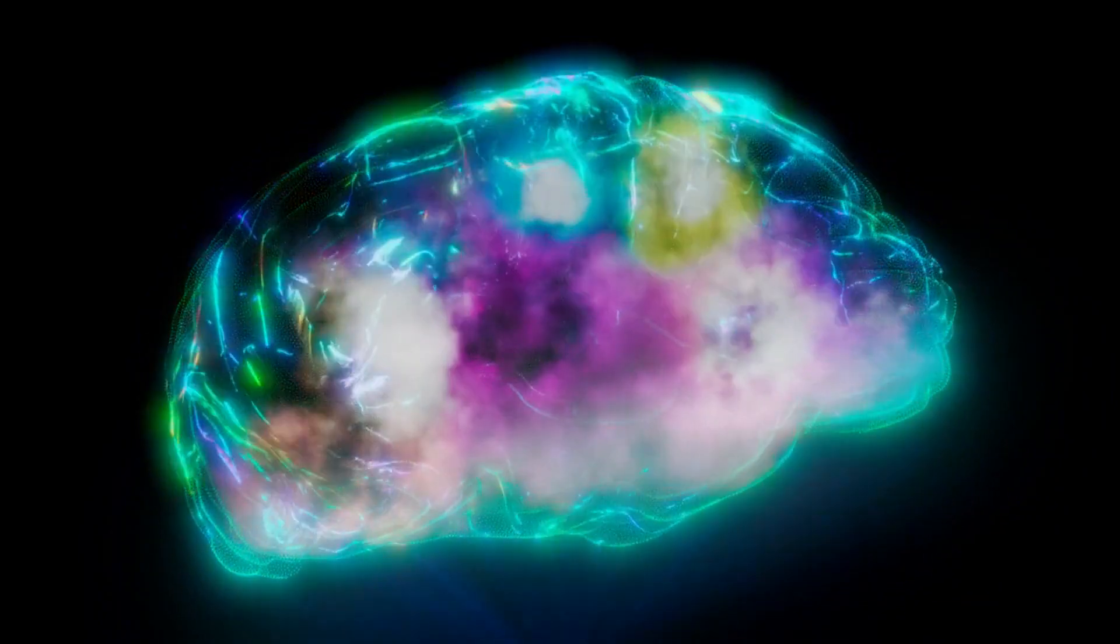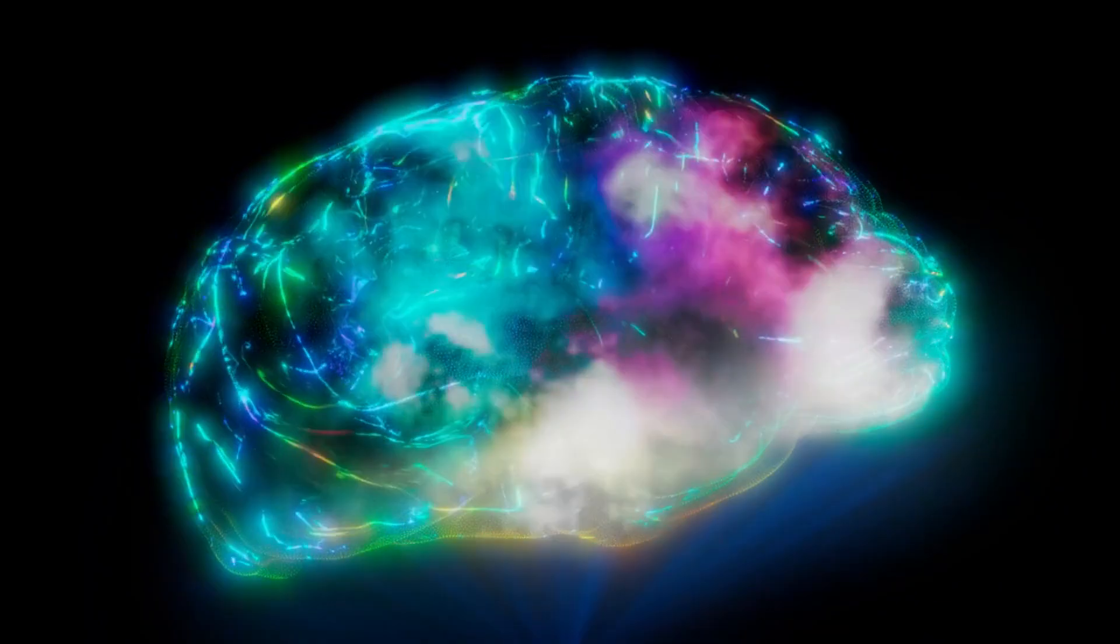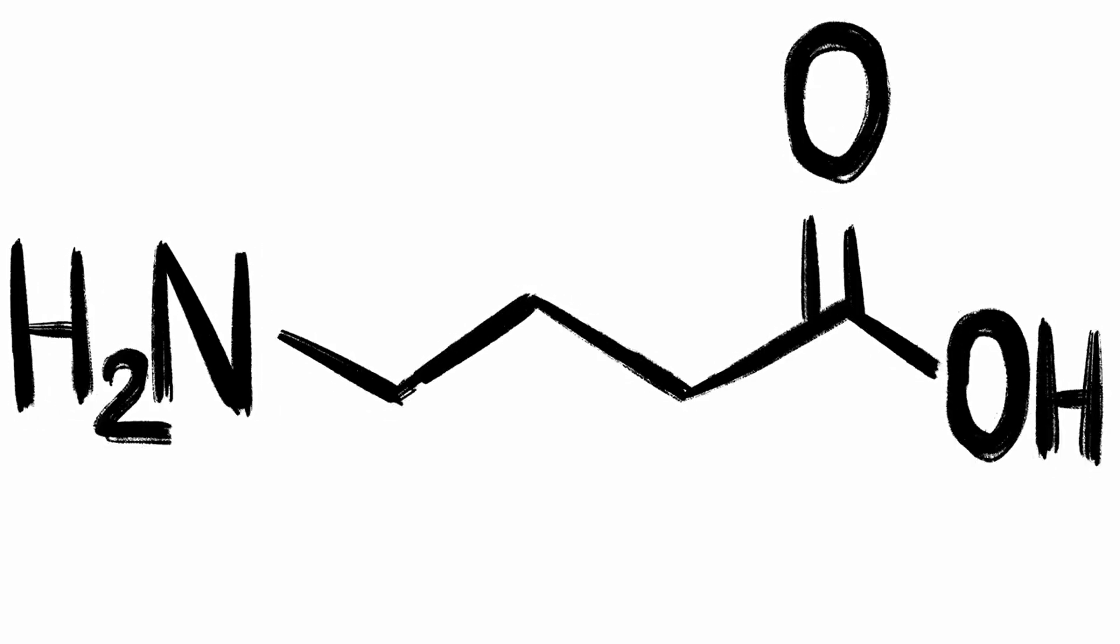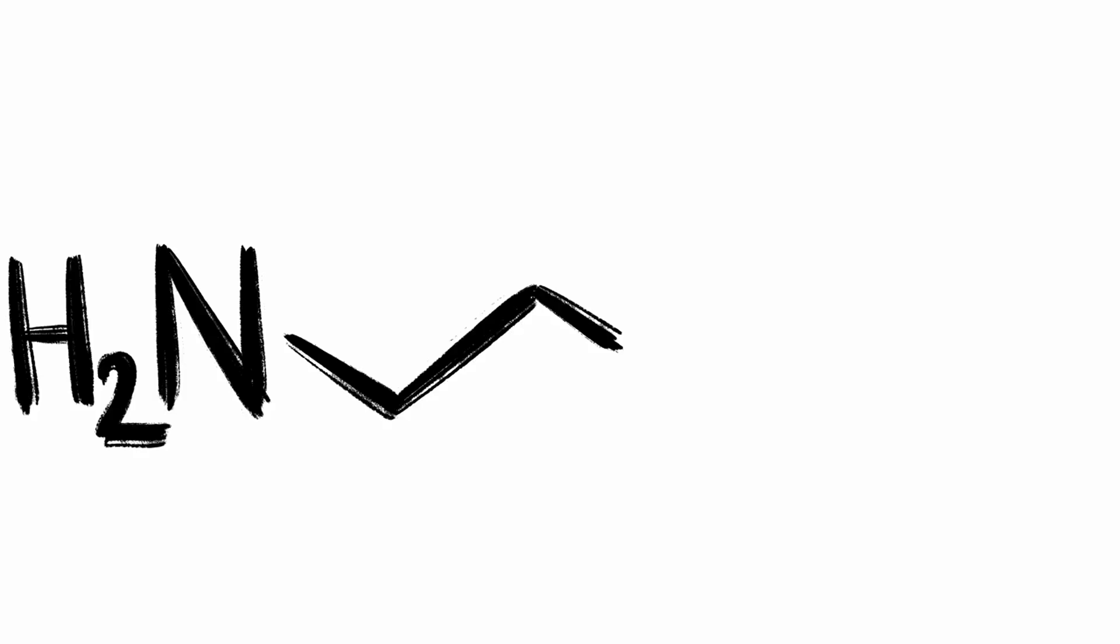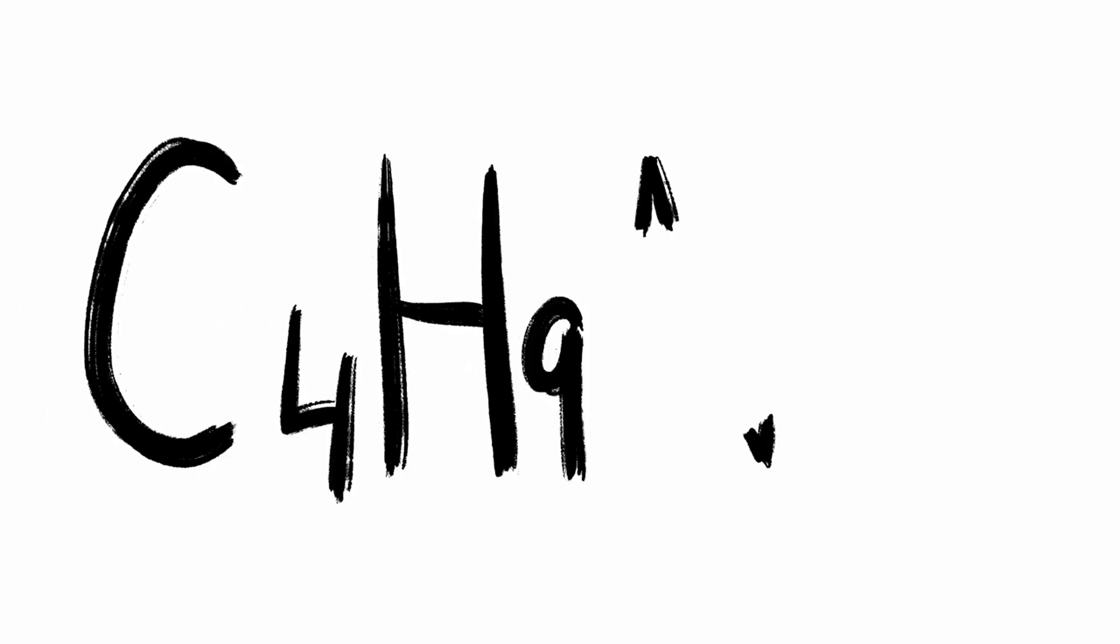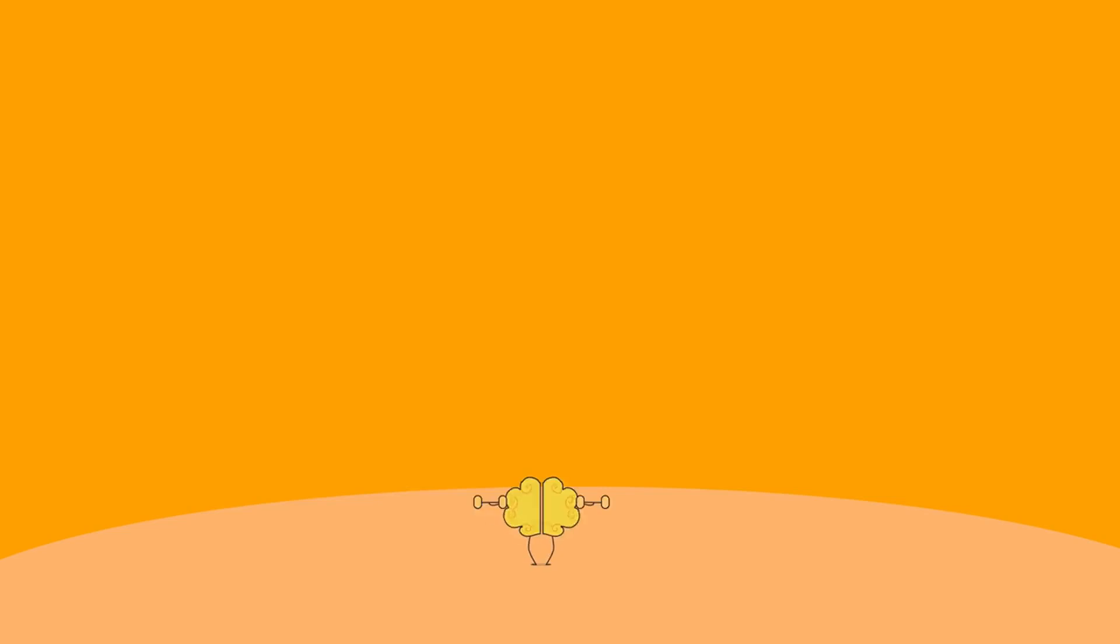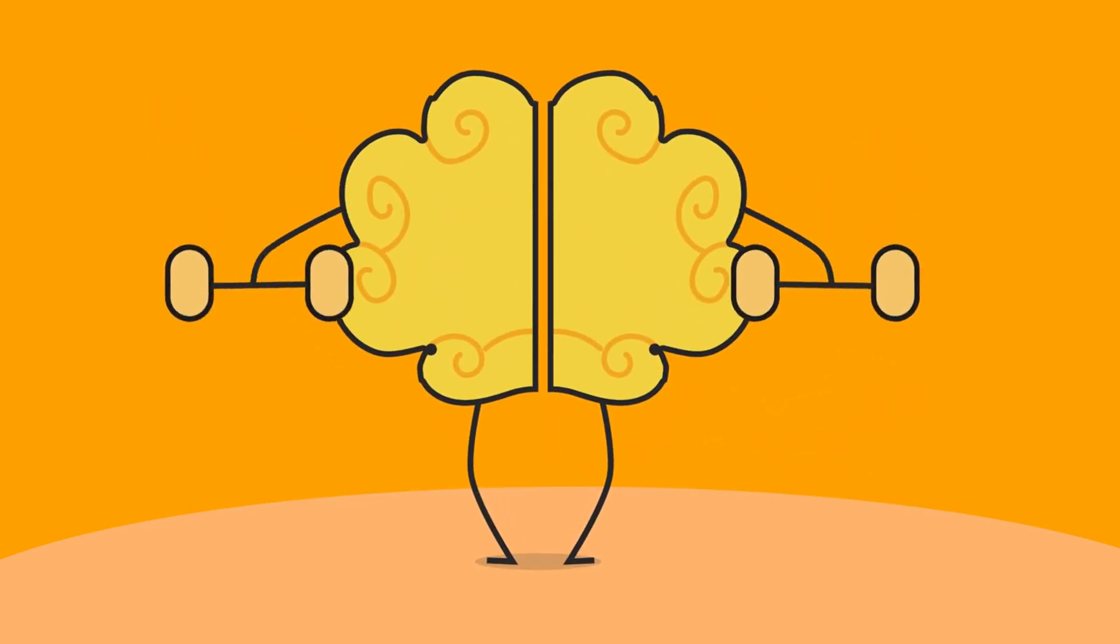Acetylcholine is involved in muscle activation and is critical for learning and memory. GABA, or gamma-aminobutyric acid, is the main inhibitory neurotransmitter in the brain, reducing neuronal excitability and preventing overstimulation. It's essential for maintaining balance in the brain's activity.